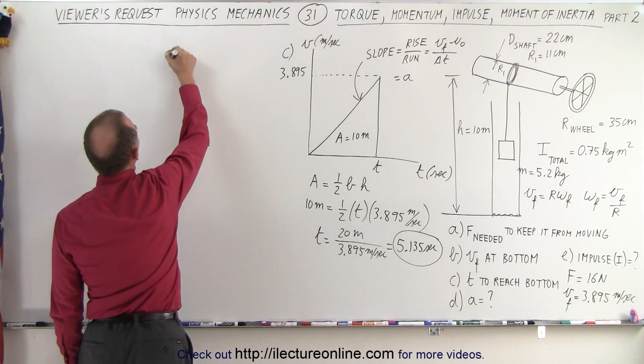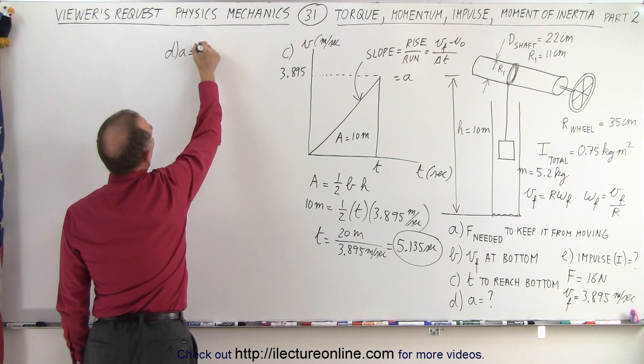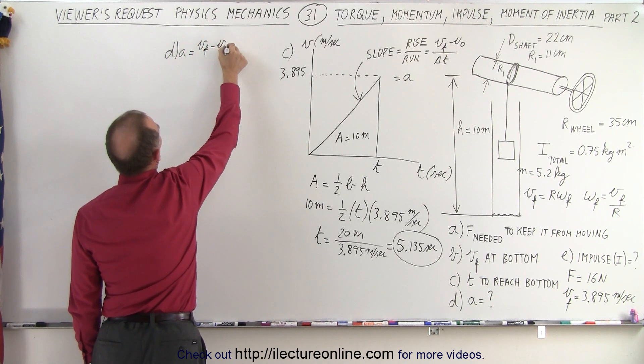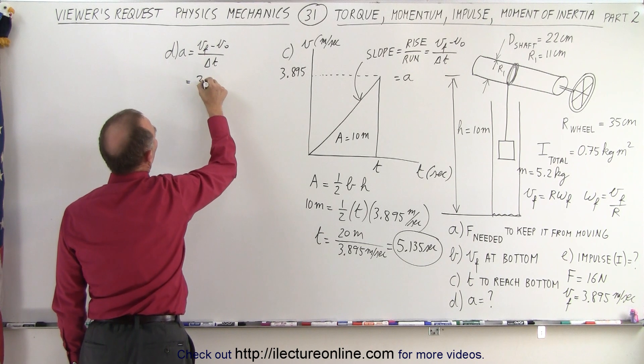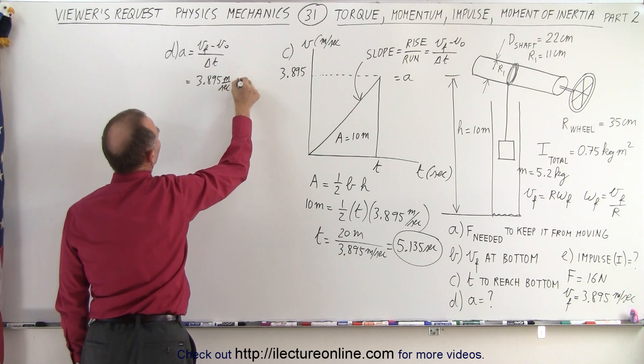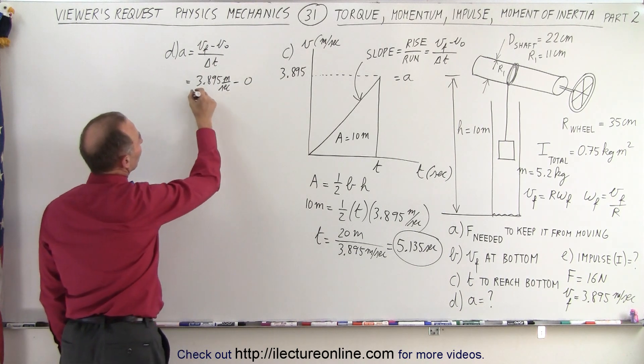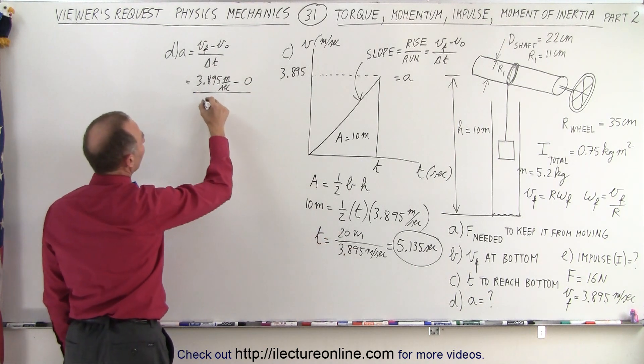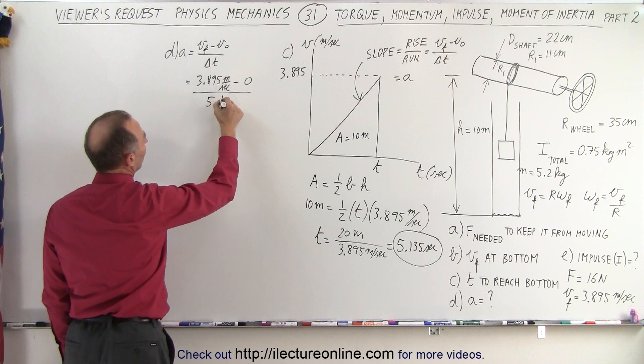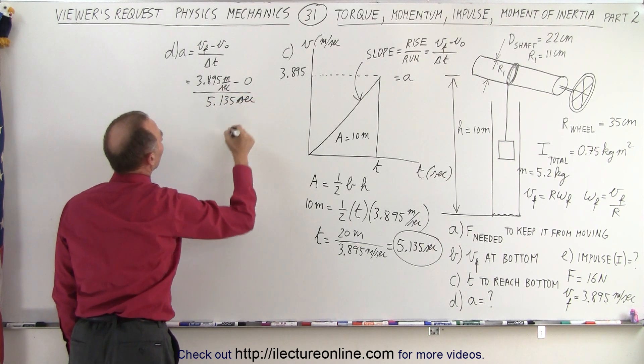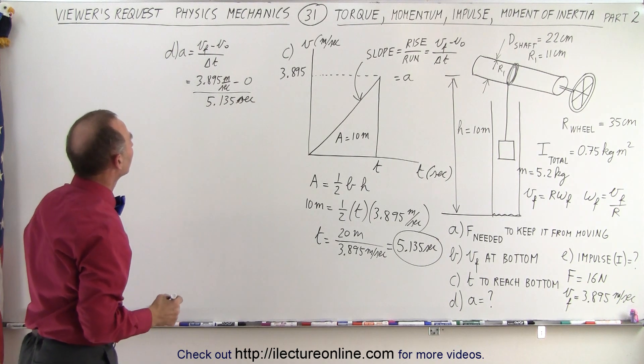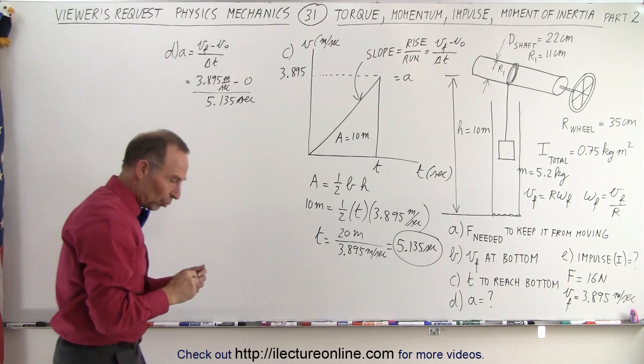So for part D, the acceleration is equal to V final minus V initial divided by the time that it took. So in this case, that would be 3.895 meters per second for the final velocity, zero for the initial velocity, and the time that we just got would be 5.135 seconds. There we go. And that would be meters per second squared.